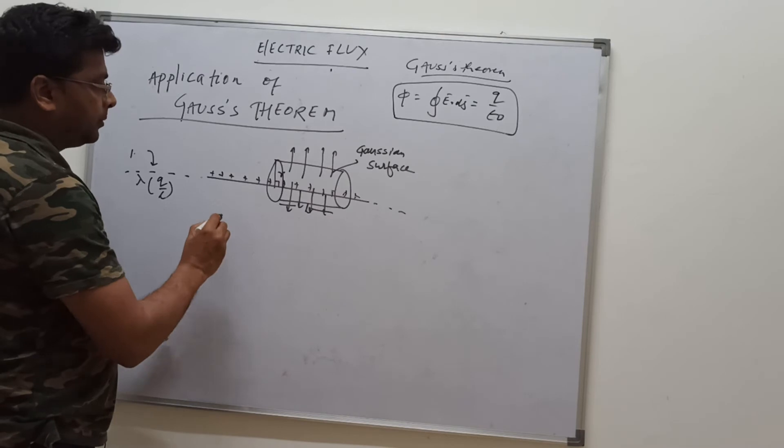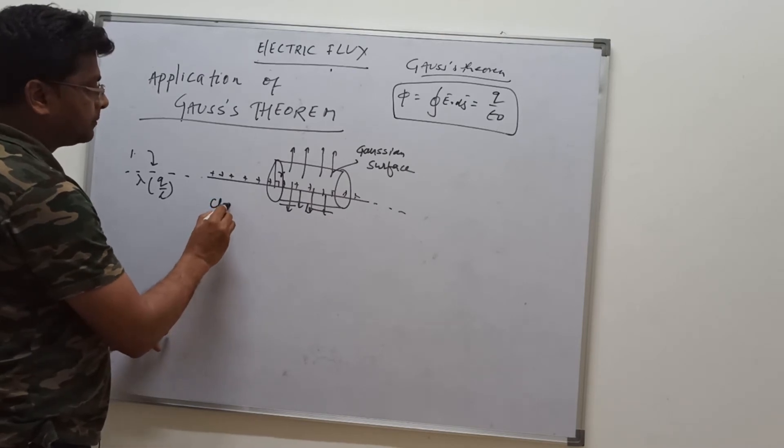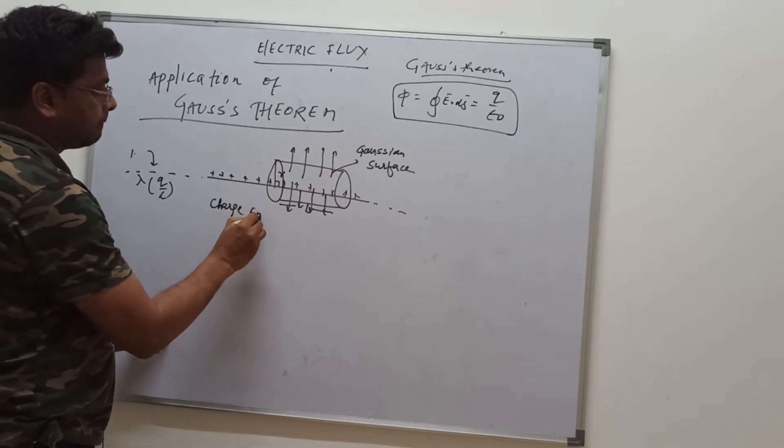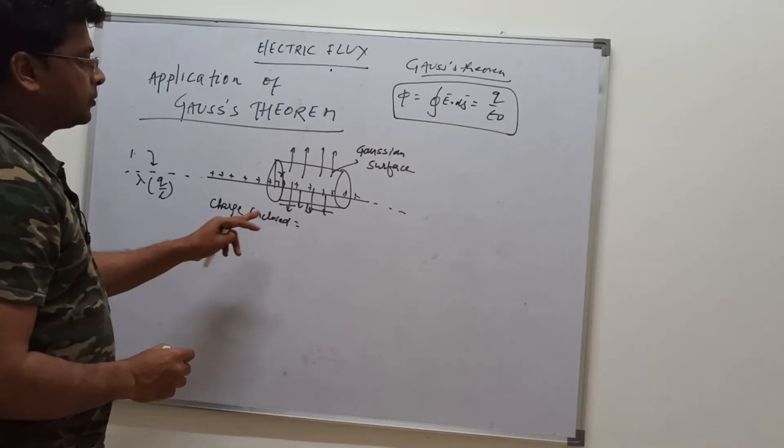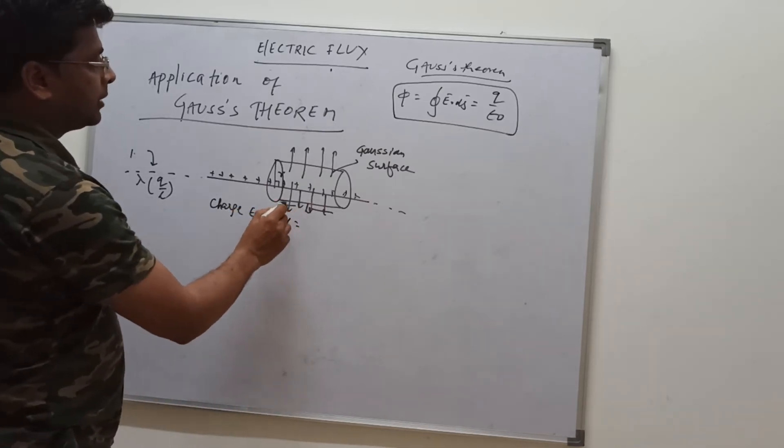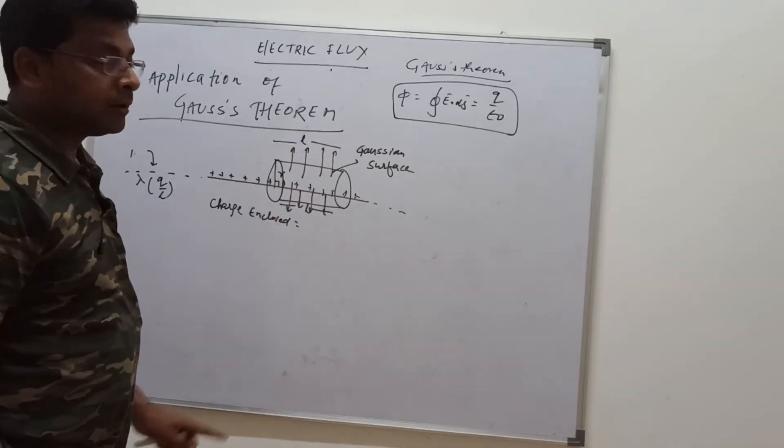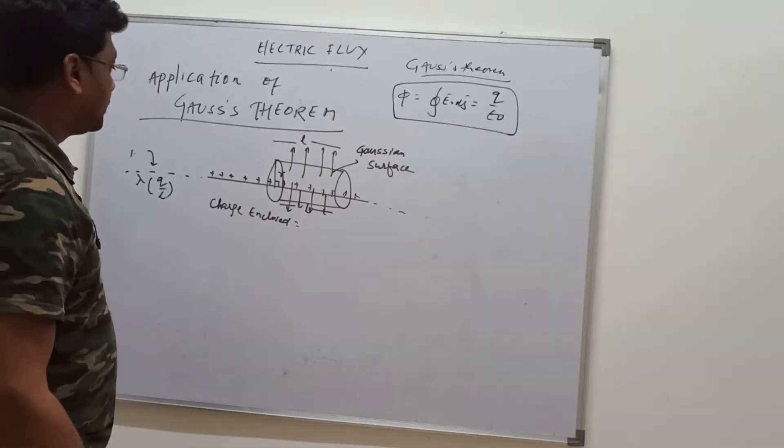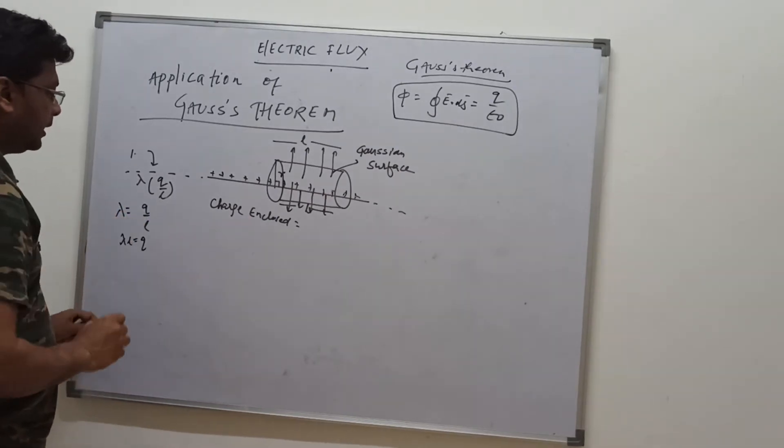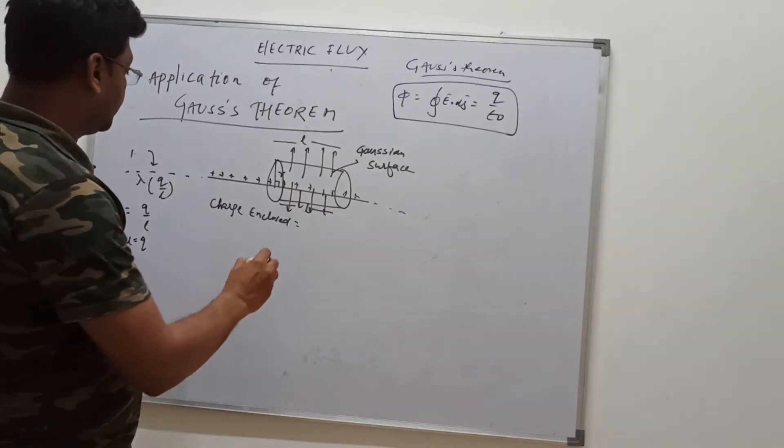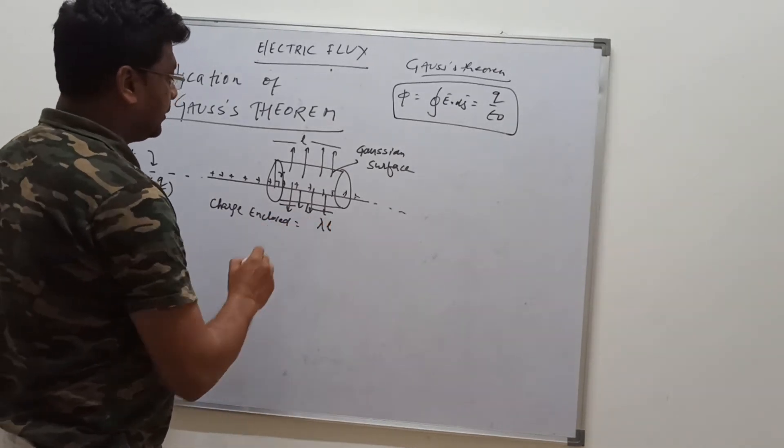So for this length we have to find the charge enclosed. For length l, we are working with this cylinder. So lambda is equal to q by l, so lambda into l is equal to charge enclosed.